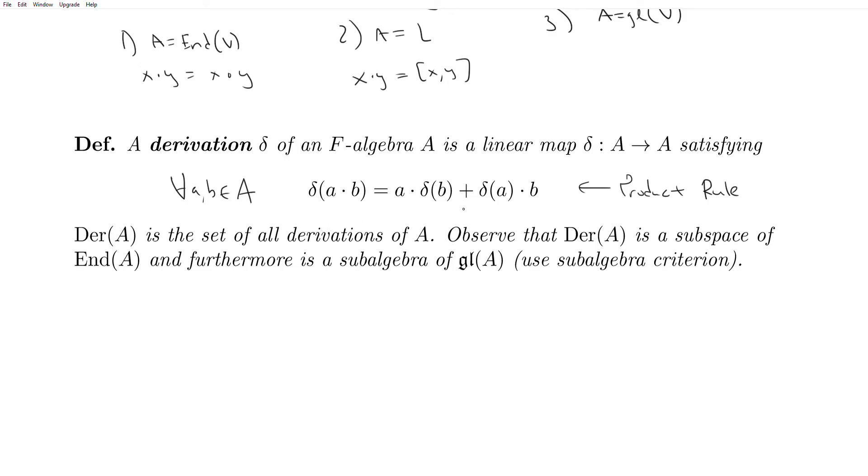We say Der(A) is the set of all derivations of A, and an important observation to make is that since Der(A) consists of only linear maps, if you use the subspace criterion, you see that 0 is a derivation, and it's closed under addition and scalar multiplication.